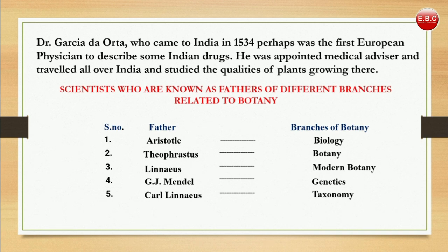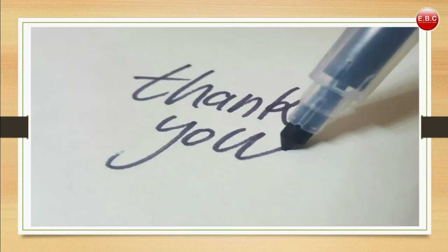These are some scientists known as the fathers of different branches related to botany. Aristotle is known as the father of biology, which consists of two branches: botany and zoology. Theophrastus is known as the father of botany. Linnaeus is known as the father of modern botany. Gregor Johann Mendel is known as the father of genetics, and Carl Linnaeus is also known as the father of taxonomy. Thank you for watching.